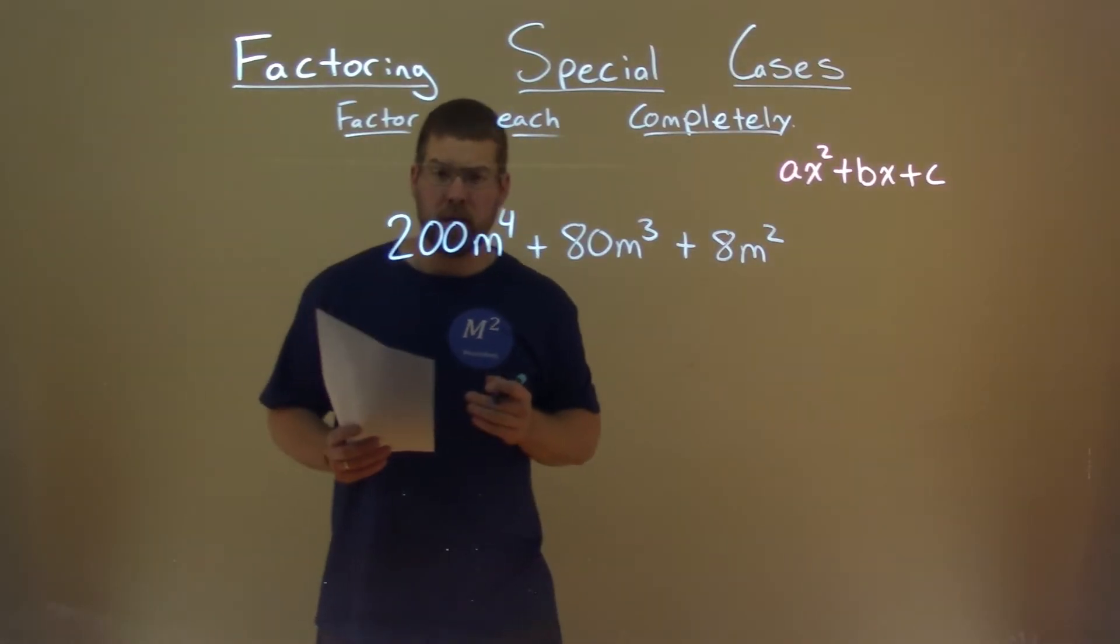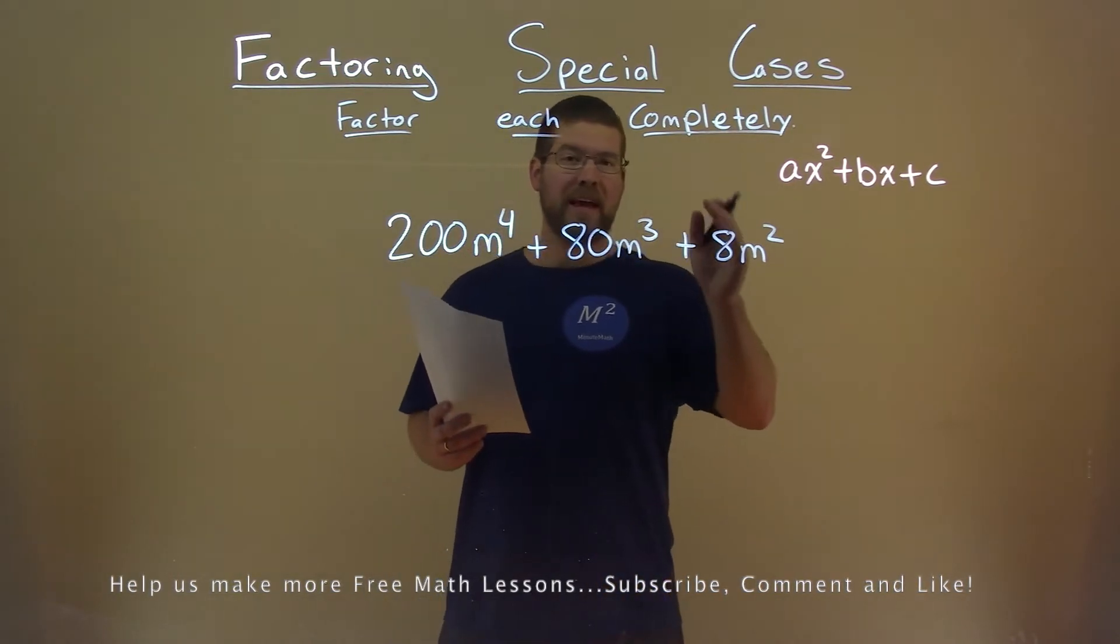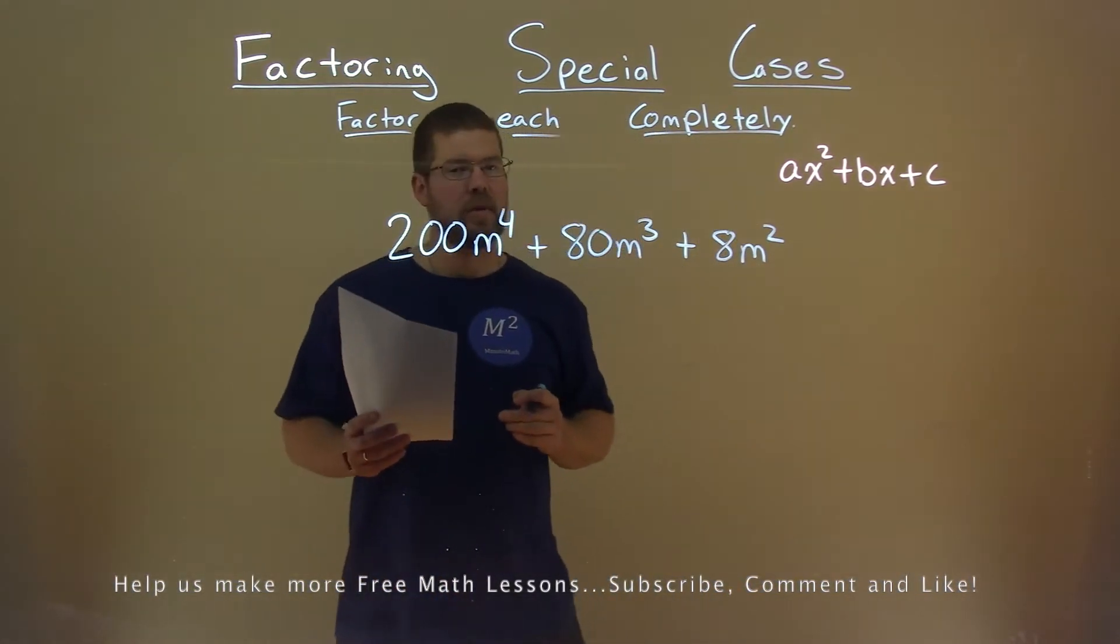We're given this problem right here, 200m to the fourth power plus 80m to the third power plus 8m squared, and we have to factor this completely.